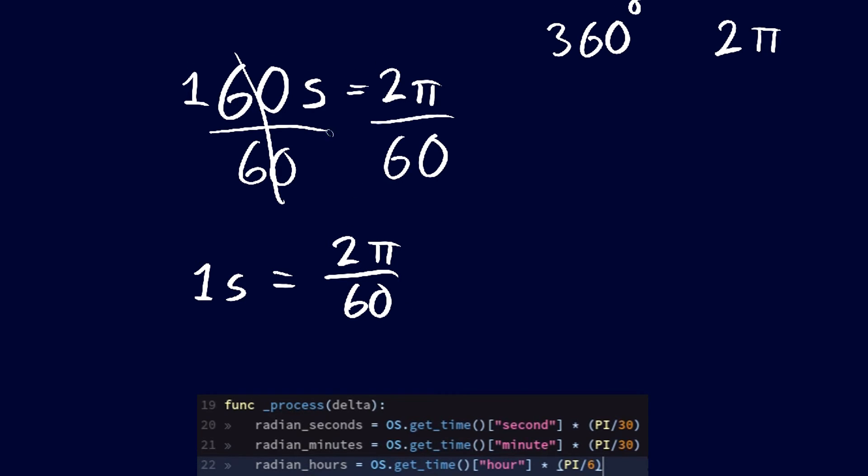However, in my code, I simplified this even further. I turned this into pi divided by 30. And that is because 2 divided by 60 is the same as 1 divided by 30. And 1 divided by 30 multiplied with pi is just pi divided by 30. Knowing that for each 1 second we get this much angle, we just multiply this value with the current second, thus giving us the angle in radian.